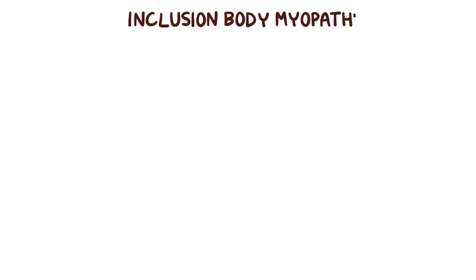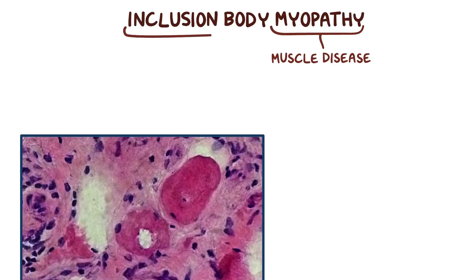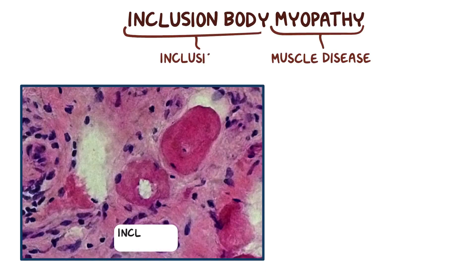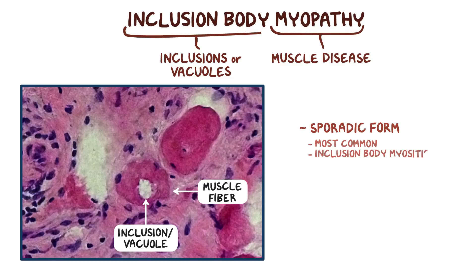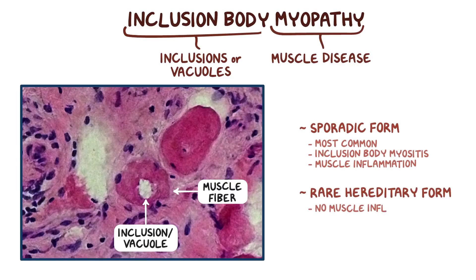In inclusion body myopathy, myopathy refers to muscle disease and inclusion body refers to the presence of inclusions, or vacuoles, formed by clumps of protein that collect within the muscle fibers. There's a sporadic form — sporadic meaning that it strikes at random — which is the most common and is also called inclusion body myositis because it causes muscle inflammation. There's also a rare hereditary form that causes no muscle inflammation.